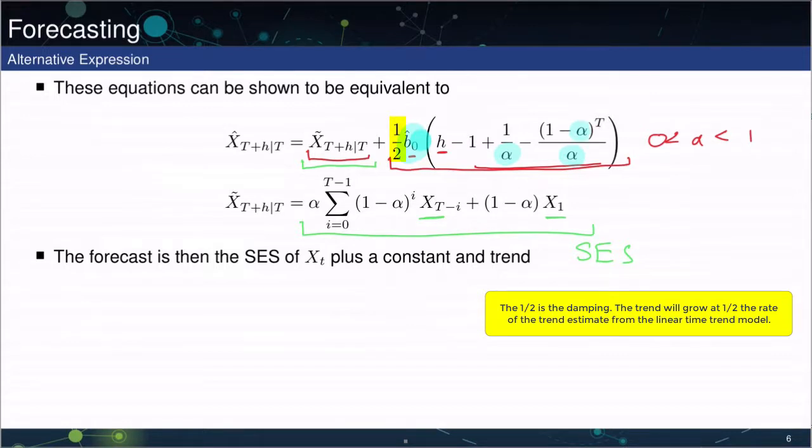In fact, the only thing you actually need to operationalize these forecasts is to have an estimate of beta naught hat and to have an estimate of alpha. So beta naught will be estimated as part of an OLS. Alpha will be estimated to fit the SES of X. So those are the two choices that one needs to do to implement this forecasting model, the two parameters one needs to estimate to implement the forecasting model.